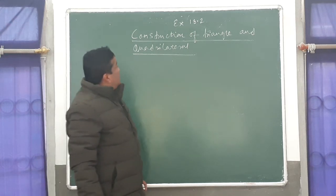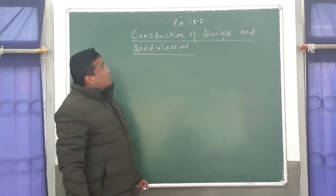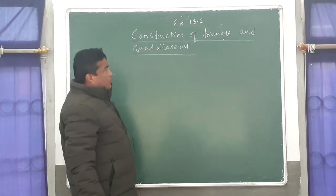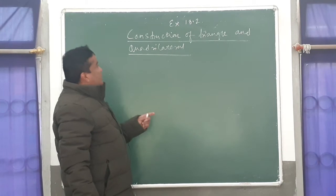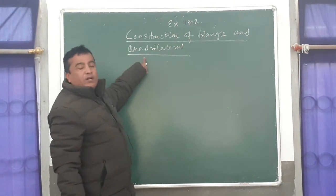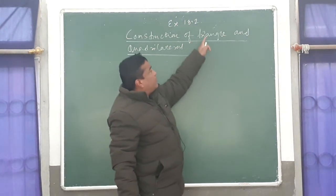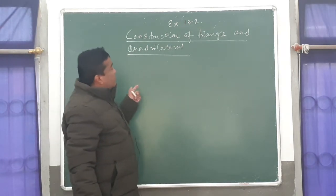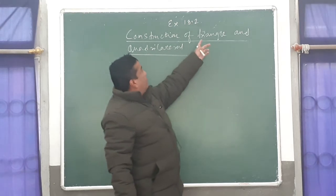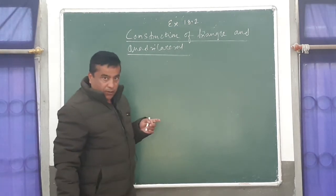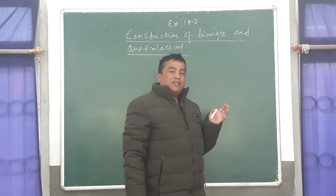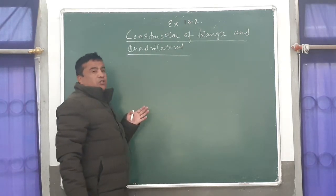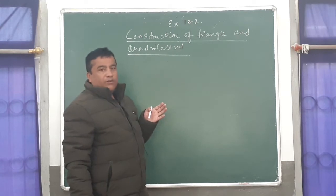Welcome back. Today we are going to start construction, which is Exercise 13.2 according to your textbook. In your textbook, only construction of quadrilateral is there, but without knowing triangle you will not be able to understand quadrilateral. So first we will do a few questions from construction of triangle, which we have done in class 8 also. Today I will teach you how to construct the circumcircle of a triangle.